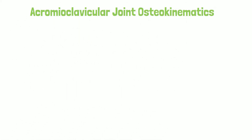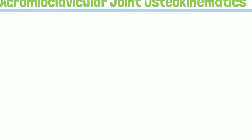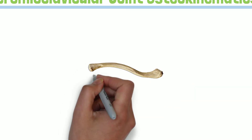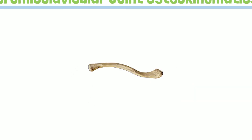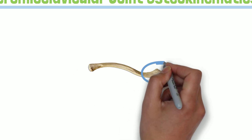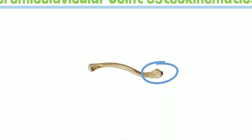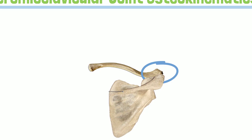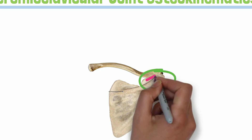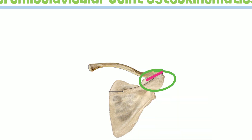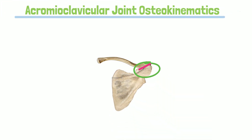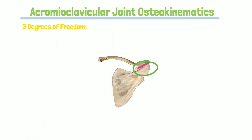Hello! In this video we will examine acromioclavicular joint osteokinematics. The acromioclavicular joint is formed between the distal end of the clavicle and the acromion process of the scapula. It is a plane synovial joint with three degrees of freedom.